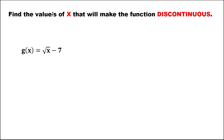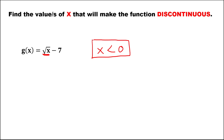For this sixth function, since it contains a radical, the square root of a negative number is an imaginary number. Therefore, x must not be less than 0, meaning all negative numbers make this function discontinuous.